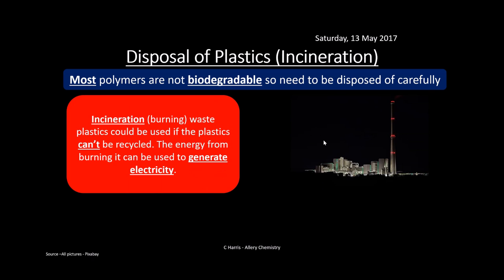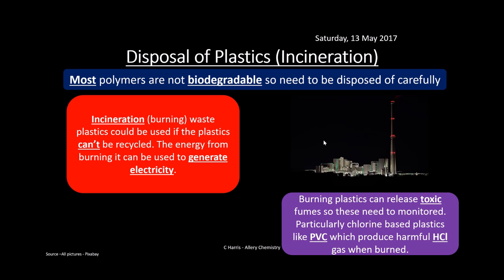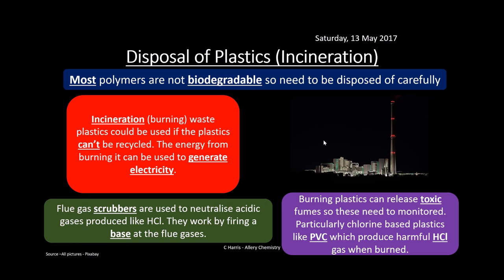Another disposal method is incineration. Burning plastics can generate electricity, but there is a downside: toxic fumes are released. PVC is particularly harmful — burning it releases HCl, which is acidic and dangerous to inhale. Flue gas scrubbers are used to neutralise these acidic gases by firing a base solution at the flue gases, which reacts with HCl to form a neutral salt, preventing it from entering the atmosphere.